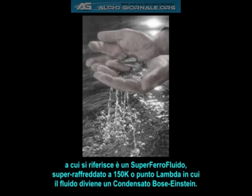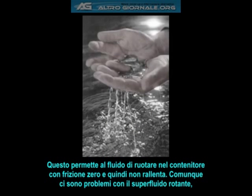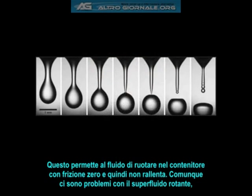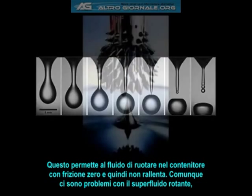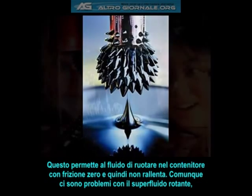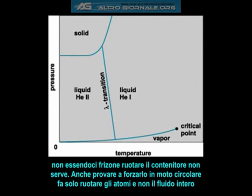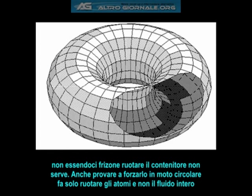The mercury-based plasma he is referring to is a superfluid ferrofluid, which is supercooled to 150 degrees Kelvin — the lambda point at which the fluid becomes a Bose-Einstein condensate. This allows the fluid to rotate around the container with zero friction, which means it never slows down.